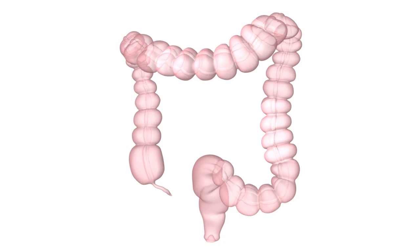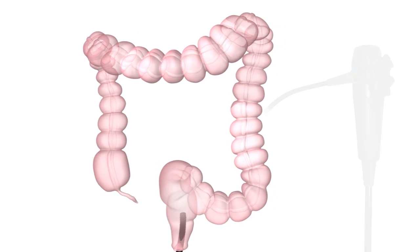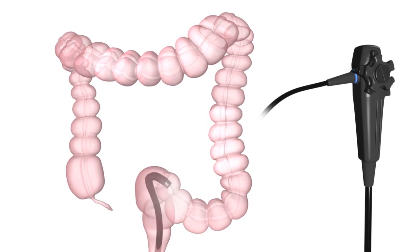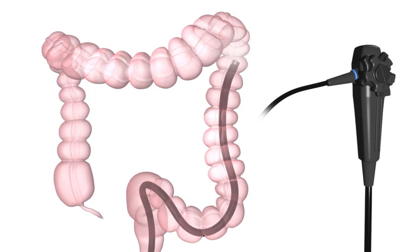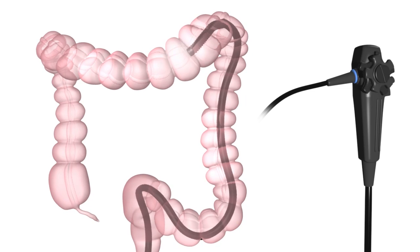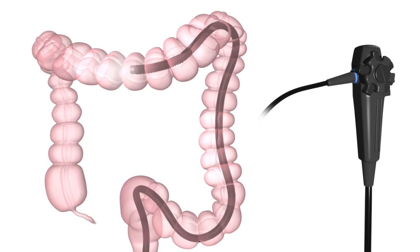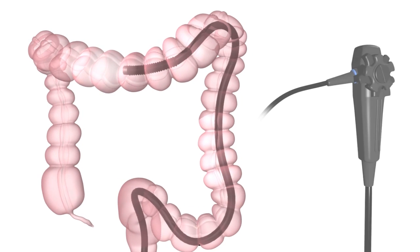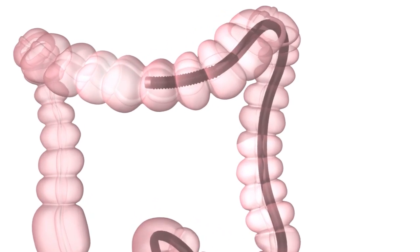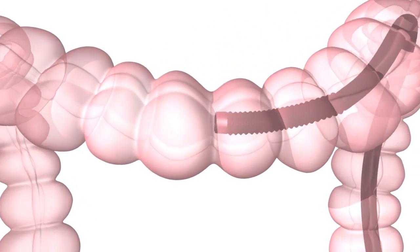A colonoscopy is performed using a colonoscope, a flexible tube that is inserted through the anus and guided through the colon to the cecum. A small amount of air may be blown into the colon to help with the visualization.